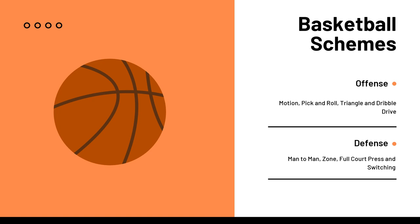On offense, the motion offense emphasizes constant player movement, passing, and spacing — players continuously screen for each other, cut to the basket, and rotate positions to keep the defense off balance. The pick and roll involves a ball handler getting screened by a bigger teammate; the ball handler can drive to the basket, pull up for a shot, or pass to the rolling big man or open shooters outside. The triangle offense features a series of passing options and player movements based on spacing and floor geometry, emphasizing post play, off-ball cuts, and perimeter shooting. The dribble drive emphasizes dribble penetration to kick out to shooters, with players attacking the basket off the dribble, drawing defenders and opening passing lanes.